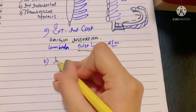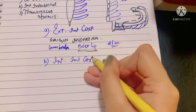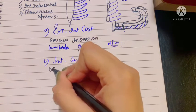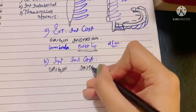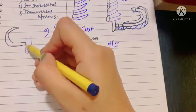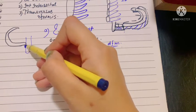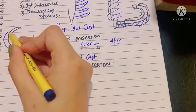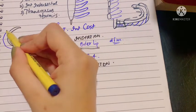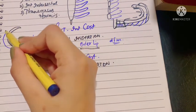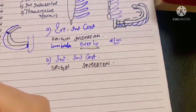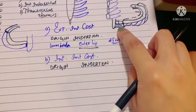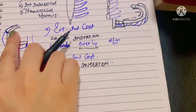Now let's talk about the internal intercostal muscle, which is completely opposite to the external intercostal muscle. Its horizontal extent begins from the lateral border of the sternum anteriorly — opposite to the external intercostal which began posteriorly — and goes all the way to the angle of the rib. At the angle of the rib, it continues as the internal intercostal membrane posteriorly. So the external intercostal muscle becomes the intercostal membrane anteriorly, while the internal intercostal muscle becomes the intercostal membrane posteriorly.